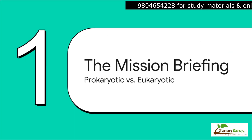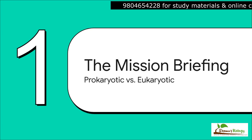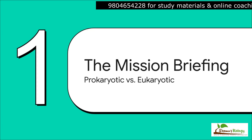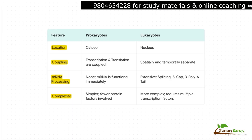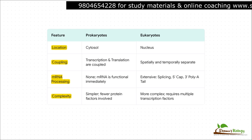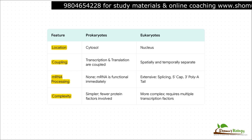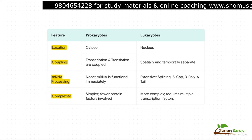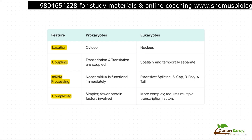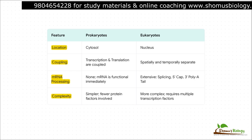First up, our mission briefing. Before we dive deep into the prokaryotic world, we first have to understand the lay of the land, and that means knowing how it's different from the system in eukaryotes. Getting this context right from the start makes everything else so much clearer. Just look at how incredibly streamlined the prokaryotic system is. There's no nucleus, so everything is mixed together in the cytosol. This allows for an amazing shortcut — transcription and translation are coupled. As the RNA is literally being printed off the DNA, ribosomes are already latching on and starting to make protein. It all happens at once.